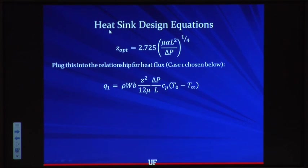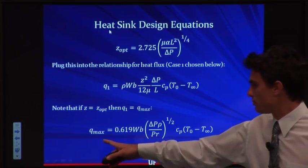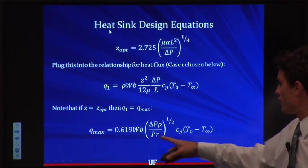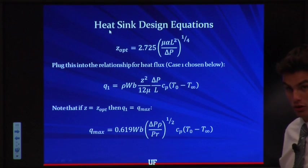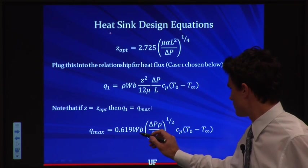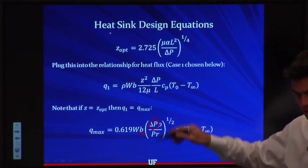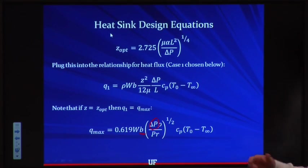With Z optimum determined, we plug it into the case one heat transfer equation (q-dot equals m-dot times c sub p times delta T) to get the maximum heat transfer value. The result is an expression for q-dot maximum as a function of the total heat sink width W, fin height B, pressure drop delta P, and various fluid properties. This is the core equation we'll use in our analysis.